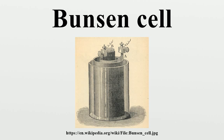The Bunsen cell is about 1.9 volts and arises from the following reaction: Zn + H₂SO₄ + 2HNO₃ → ZnSO₄ + 2H₂O + 2NO₂. When 1 mole each of zinc and sulfuric acid react with 2 moles of nitric acid, the resultant products are 1 mole of zinc sulfate and 2 moles each of water and nitrogen dioxide.